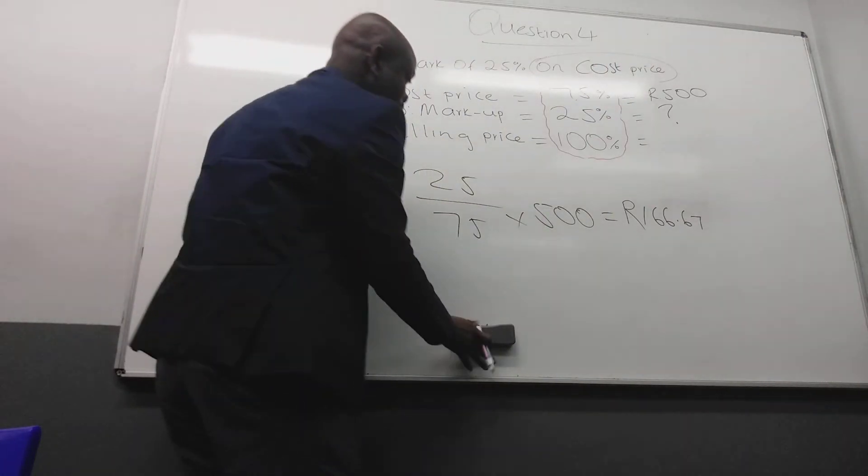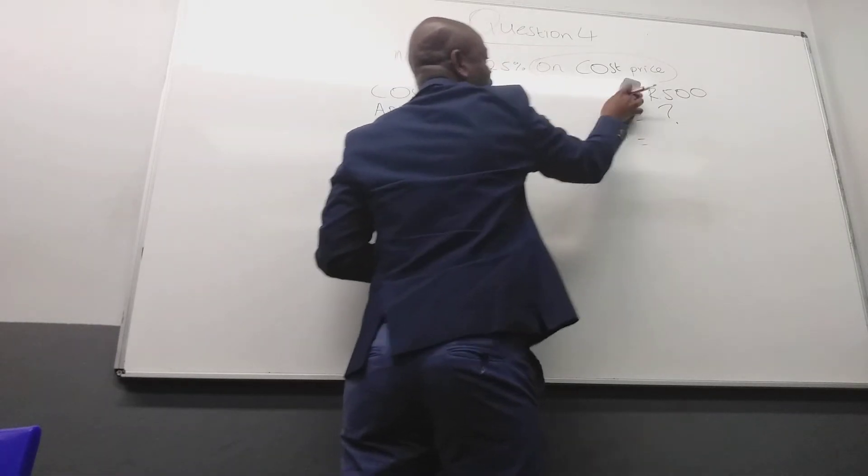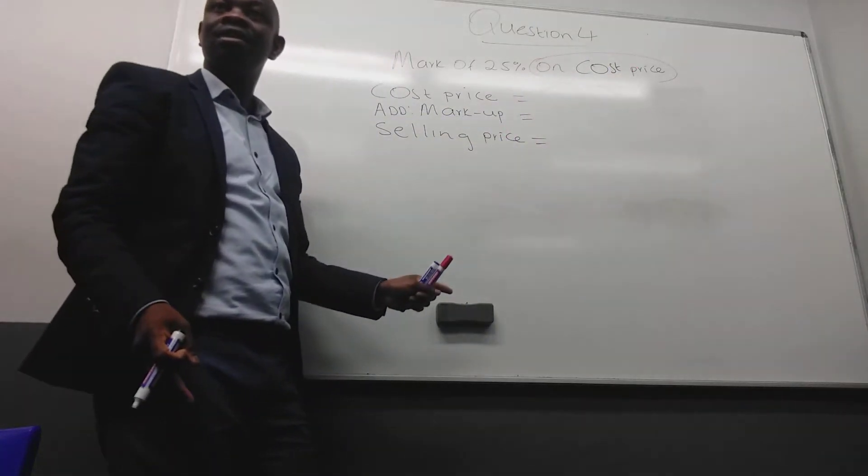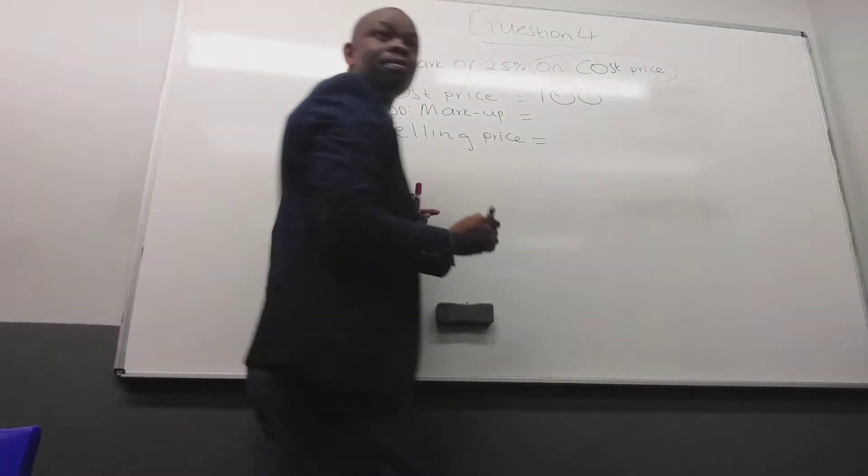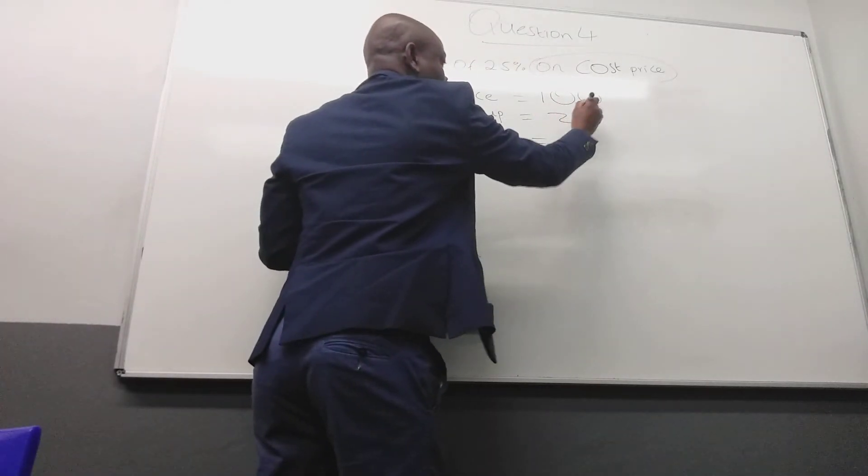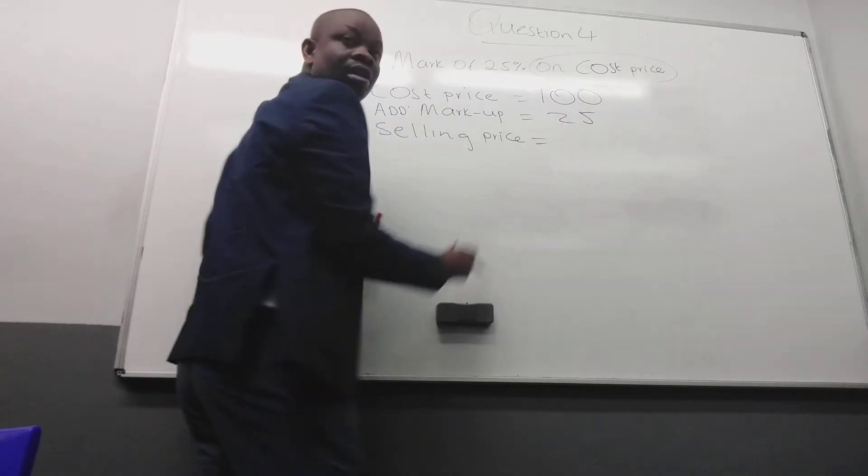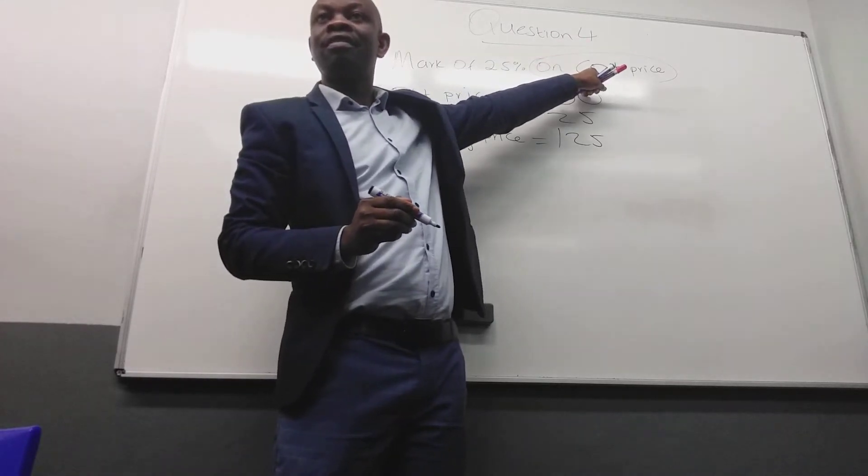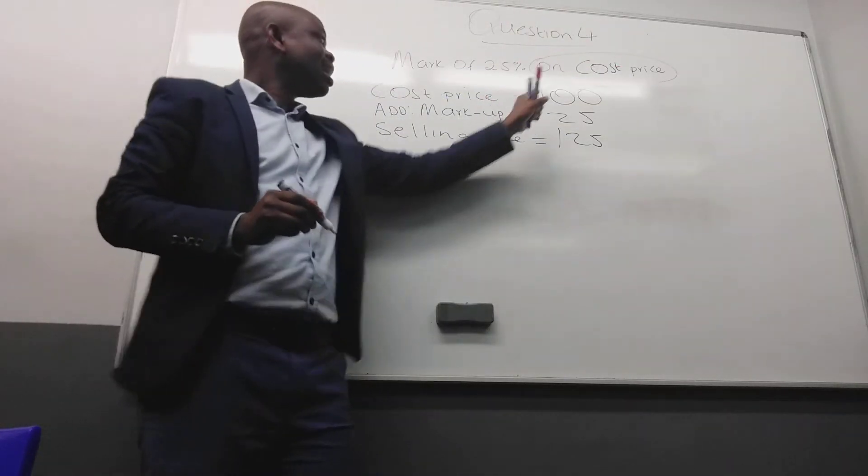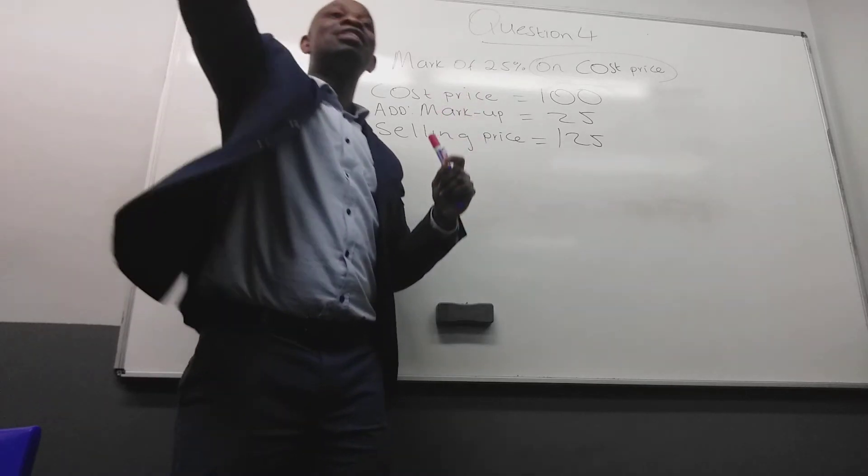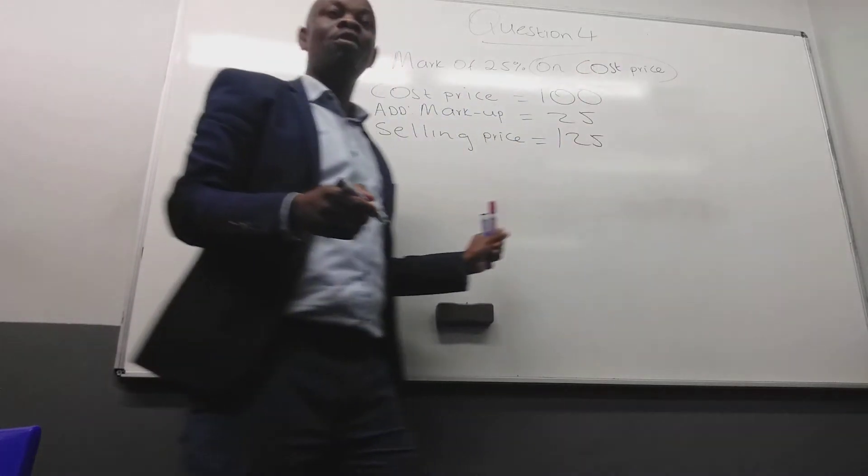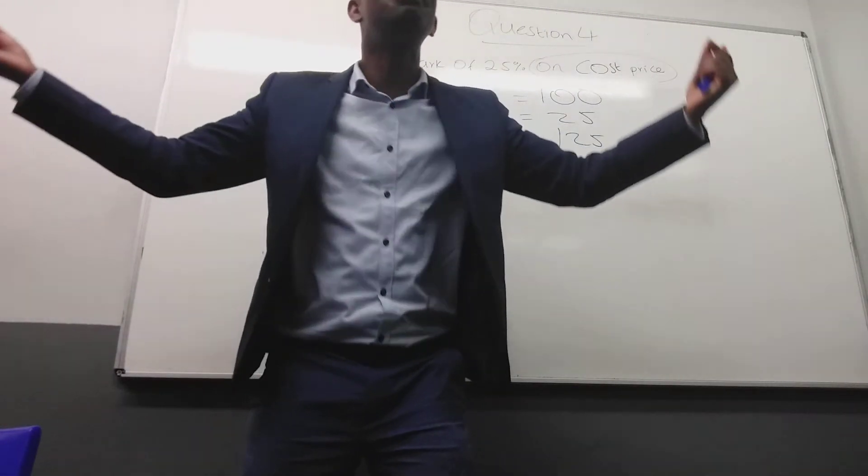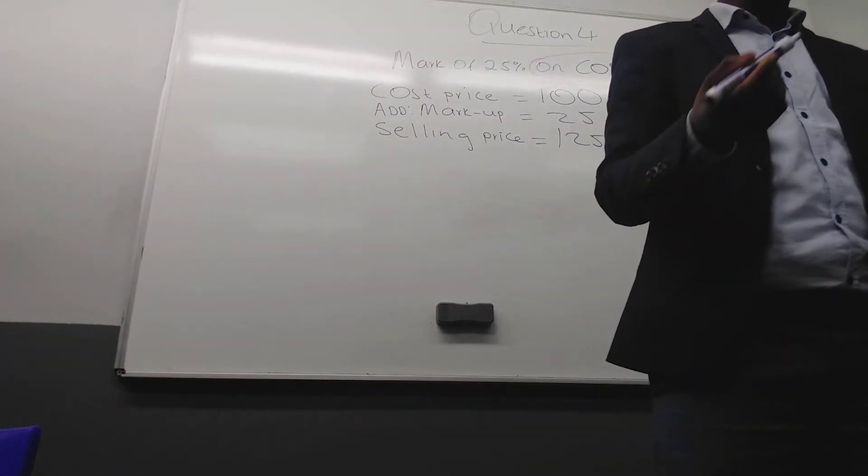So we need to analyze now. Remember, we are going to change this part. Because the markup is on cost, where must I put 100%? On cost price. In line with cost price. The markup is still 25% on cost price. 100% in line with cost price. On selling price. If it was possible to say on Sylvester, 100% in line with Sylvester. I'm just trying to make a point. I know it's boring, but you get it.